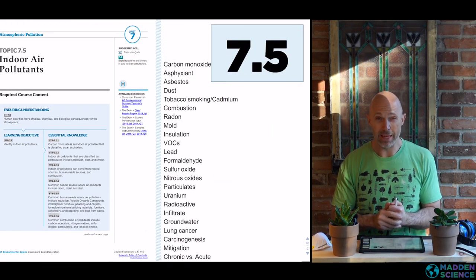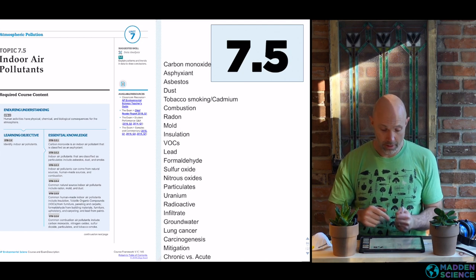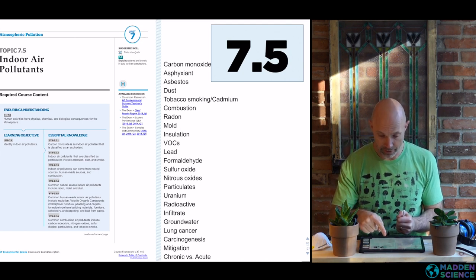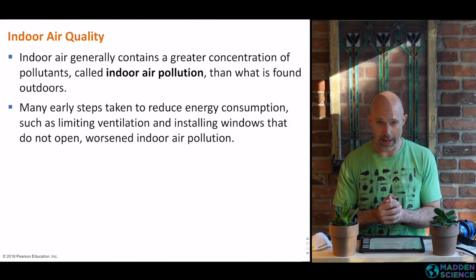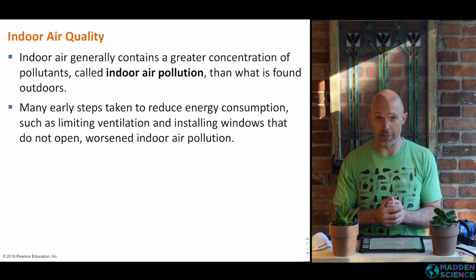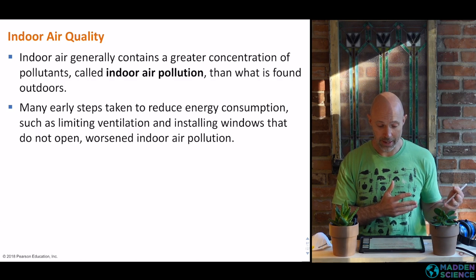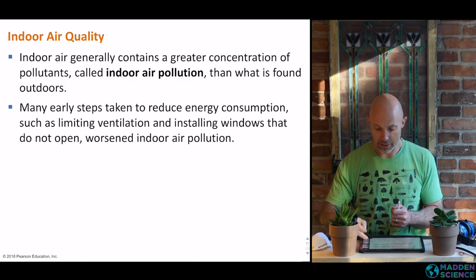Section 7.5: indoor air pollution. We've got a whole bunch of different vocab words so you can skim through those. It turns out that indoor air concentration for air pollution is higher than outside, and we're going to look at a number of steps we can do to limit that.